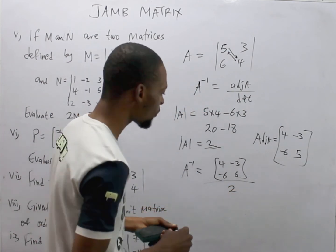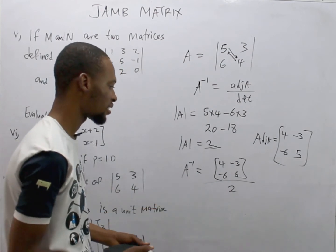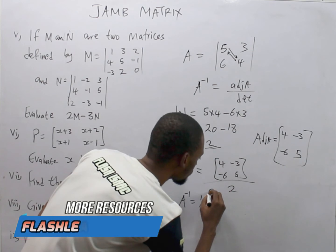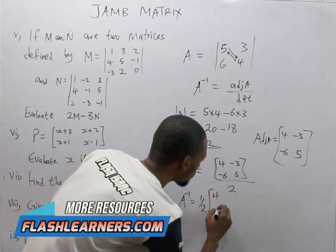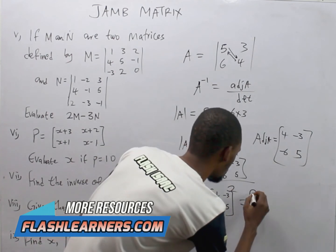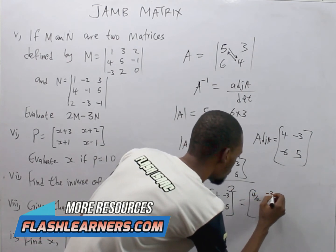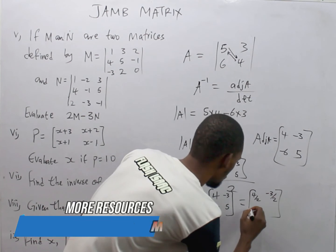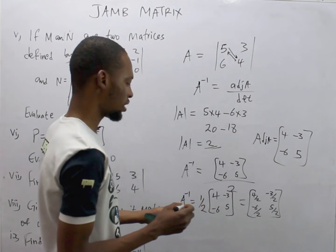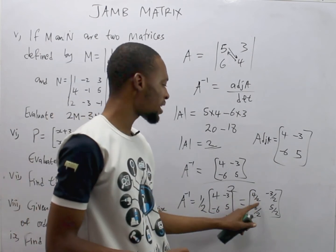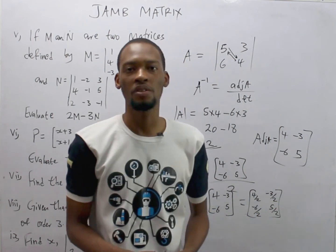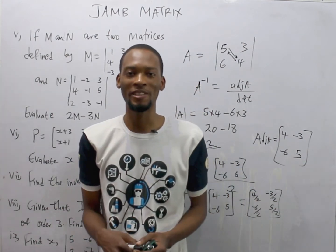So A inverse is adjoint [4, minus 3; minus 6, 5] over 2. You divide everything by 2: A inverse equals one half times [4, minus 3; minus 6, 5], which gives [4/2, minus 3/2; minus 6/2, 5/2], simplifying to [2, minus 3/2; minus 3, 5/2]. That's how you find the inverse of a 2 by 2 matrix.